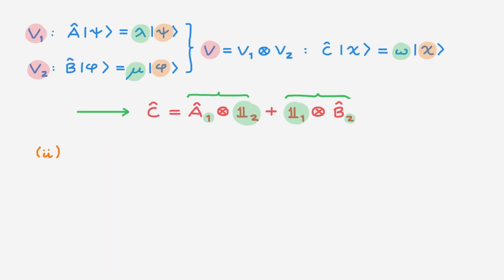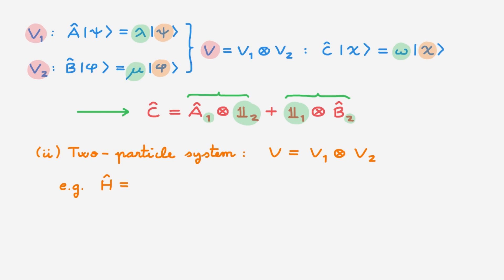Another common situation is a multi-particle system such as a two-particle system. In this case the full system is described by a tensor product state space V made of the tensor product of the state spaces associated with each individual particle. As a concrete example, in the video on two interacting quantum particles, we find that the Hamiltonian H of two particles interacting via a potential that depends on their relative position can be written as the sum of a center-of-mass Hamiltonian and a relative Hamiltonian.